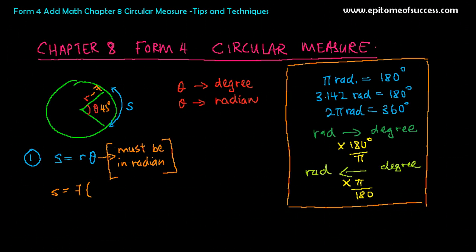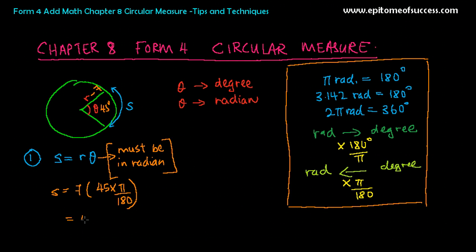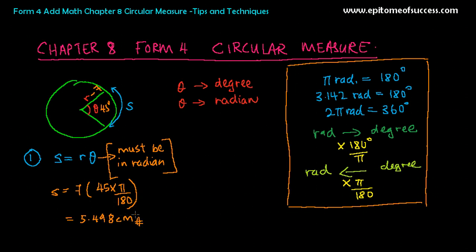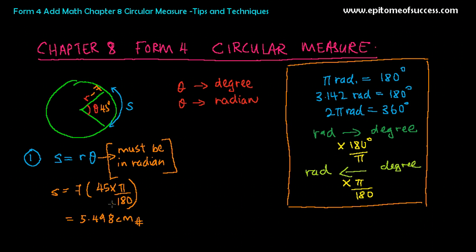So let's convert it to radian. 45 degree is to be converted to radian. How do you convert degree to radian? Times pi over 180. So you can actually straight away put it here: 45 times pi over 180. And straight away, you will get your answer. So that's 5.498 centimeter. Or you just have to press this in your calculator and straight away get the answer. So this is how you use S equals to R theta, and theta must be in radian. That's all you have to take note of. That's for the length of arc.